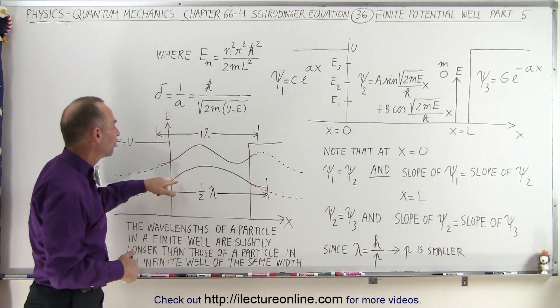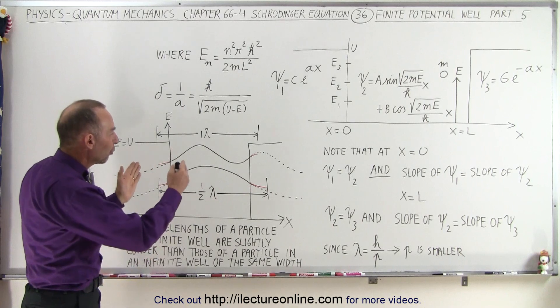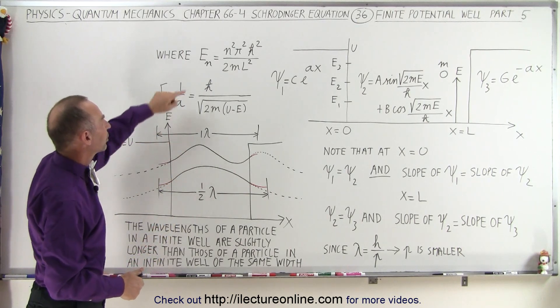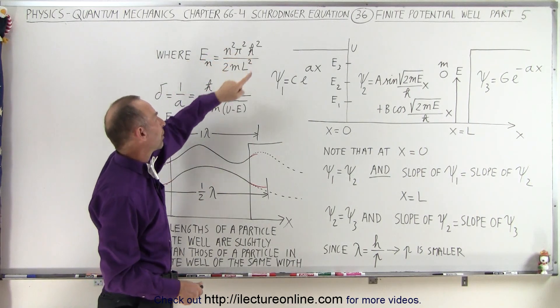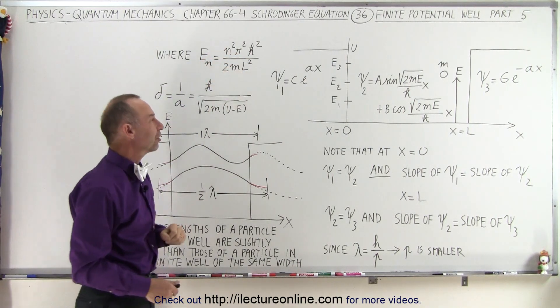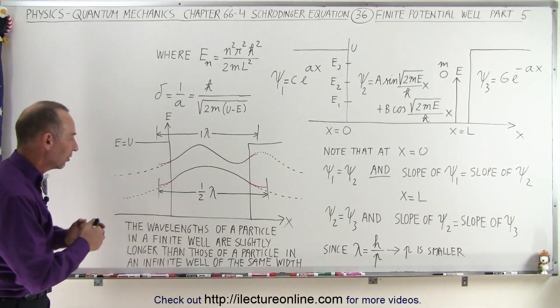We can see that we'll see an increasing number of wavelengths as the energy increases for the particle, and the energy is then defined as being n squared, pi squared, h bar squared, divided by 2m times L squared, L being the length of the well.